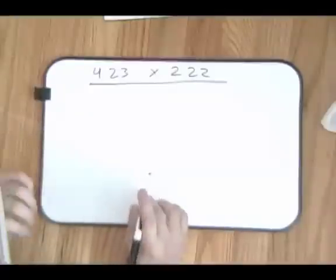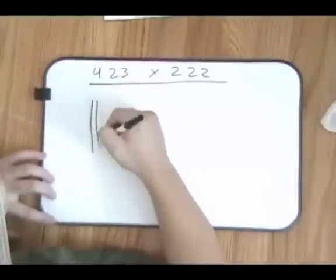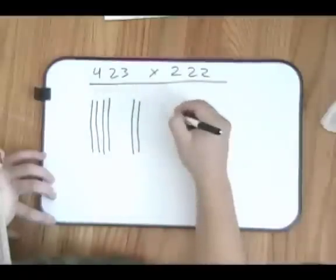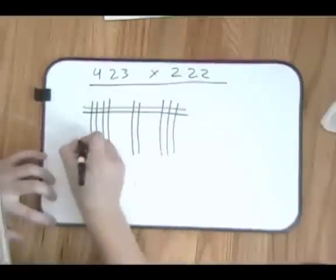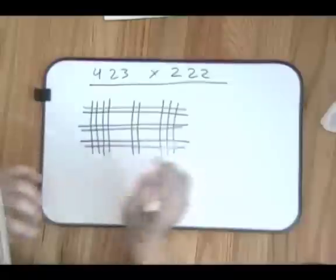So like the first one, we'll make 4 lines and 2 and 3, then 2, 2, and 2.